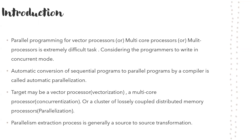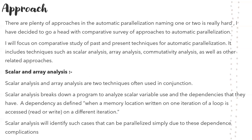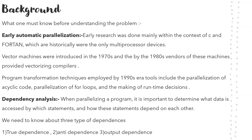The reason for source-to-source transformation is that while you could do it with binary, the effectiveness is much lower. When we look at sequential programming, loops with array access are important. Other scalar and non-loop parts are also important, but they don't speed up the processor or help turn on parallel processors.